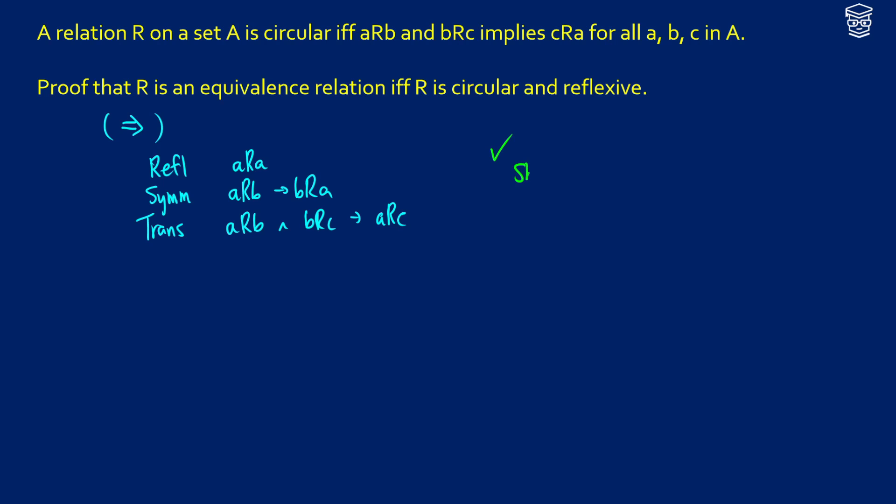But we do need to show that it's circular. So what we'll do is we're going to suppose that we have aRb and bRc. So a is related to b and b is related to c. What do we know?